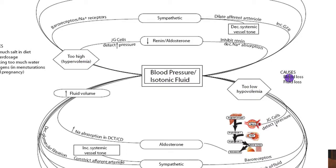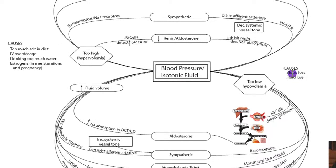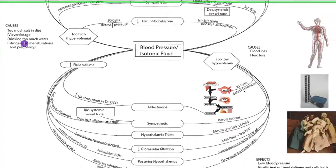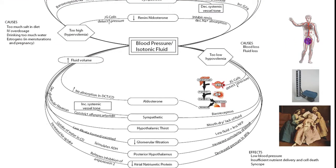The causes of hypovolemia are fairly simple — blood loss or fluid loss. This would generally be caused by hemorrhage, but could be due to burns or large-scale inflammations. The causes of hypervolemia could be a high salt diet, where high salt increases water consumption to increase overall isotonic fluid. It could also be IV overdosage, drinking too much water, or estrogen, which causes fluid retention and can cause hypervolemia.